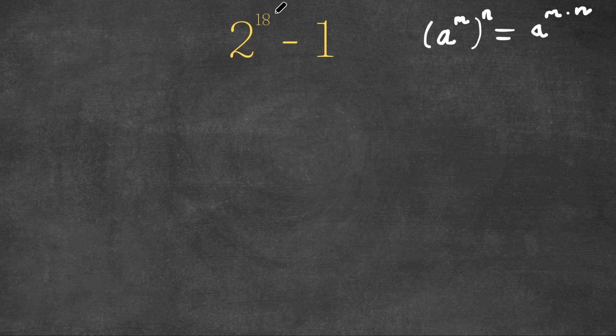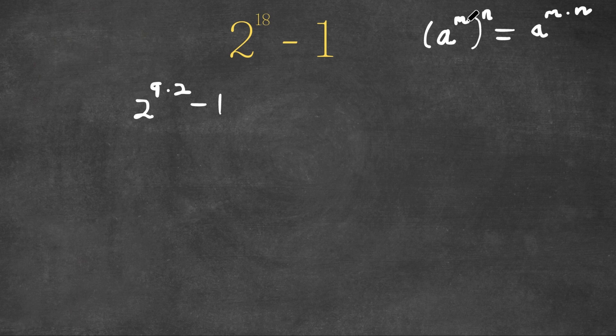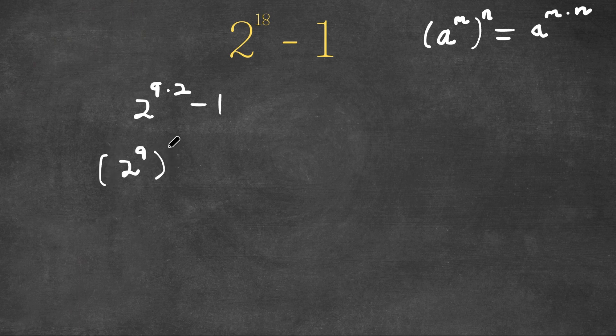So now we have 2 to the power of 18 here and 18 can be written as 9 times 2. So this is 2 to the power of 9 times 2. We have minus 1. And remember, if we have something in the form a to the power of m times n, we can write this as a to the power of m to the power of n. So now we can write this as 2 to the power of 9 to the power of 2 minus 1.